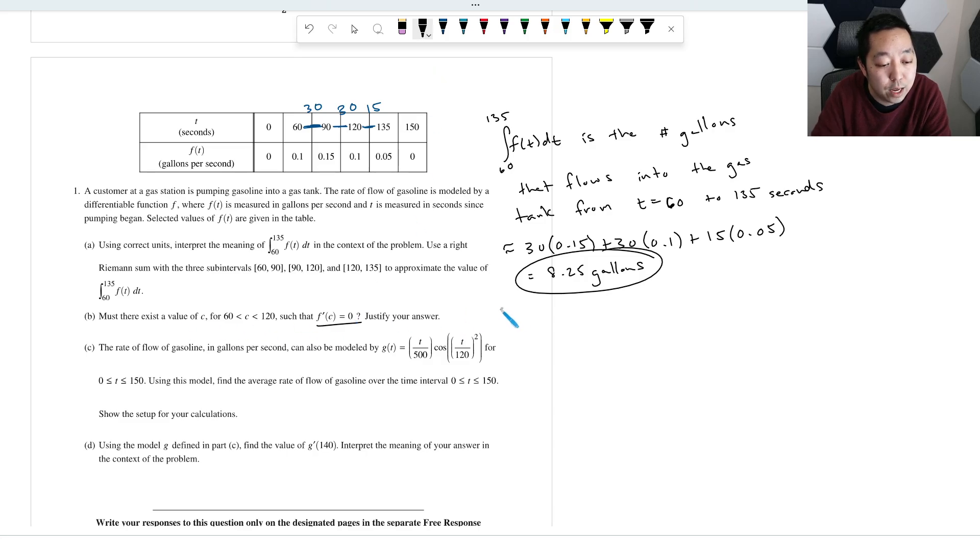So first of all, to invoke the mean value theorem, I have to say that it is continuous and differentiable. They tell you that it is differentiable, so you would say F is differentiable. That's already known, and that implies that it is continuous.